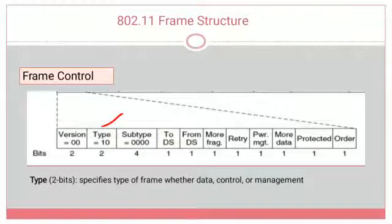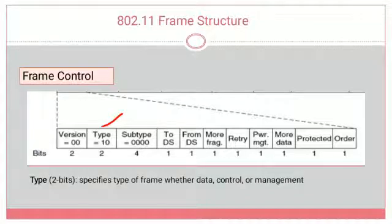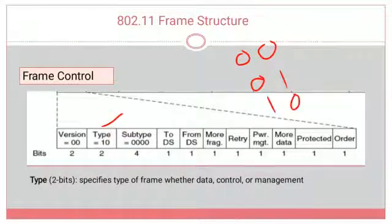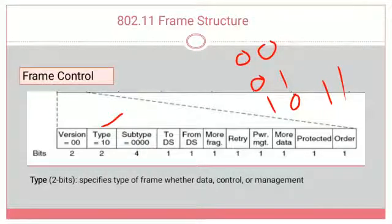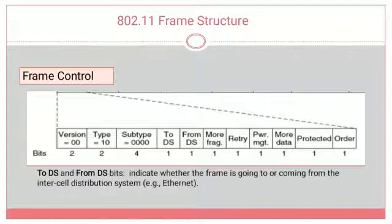The type field uses 2 bits, giving 4 possible combinations (00, 01, 10, 11), each representing whether the frame is a data frame, control frame, or management frame. The third subfield is subtype, which consists of 4 bits.